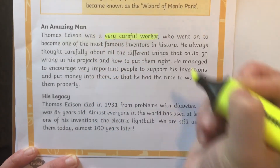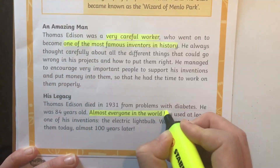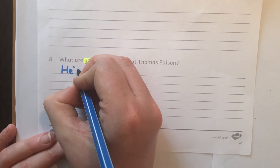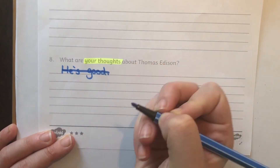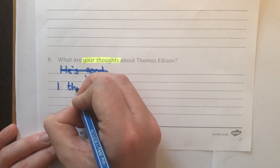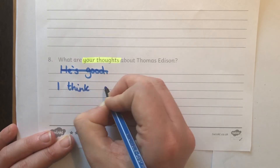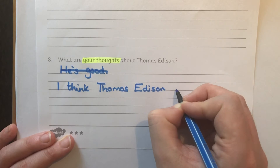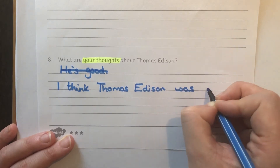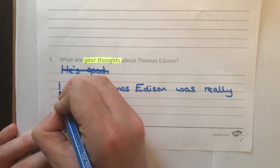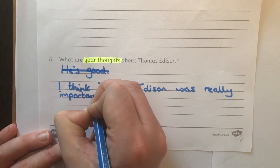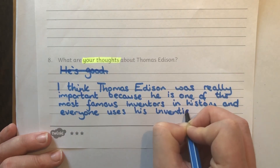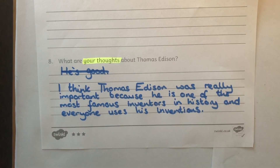Some questions just ask your child to find information in the text, but other questions ask for an inference or an opinion. In these questions you still have to justify your answer, so make sure your child has highlighted their evidence and is justifying their opinion. Activities like this help your child to become thoughtful readers and critical thinkers.